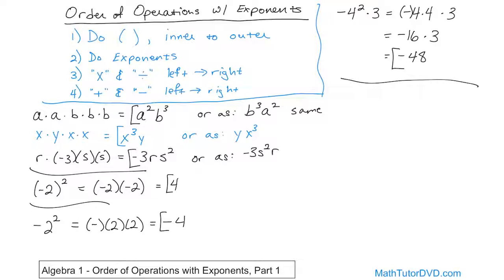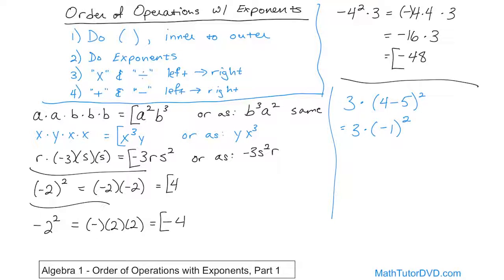The last problem for this section is three times, quantity four minus five, squared. First we look for parentheses — inner to outer — and we do have parentheses. So let's rewrite: three times, what is four minus five? Four minus five is negative one, and you still have that quantity squared. Now the exponent applies to everything inside: negative one times negative one. Negative times negative is positive, so that's positive one. Three times one is three — and that's the final answer.